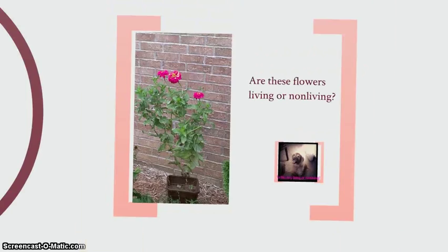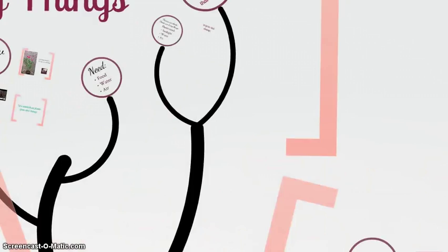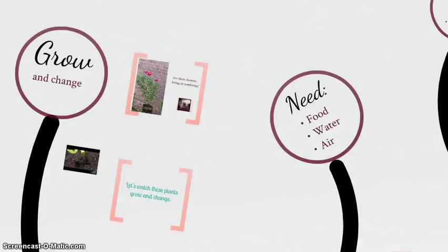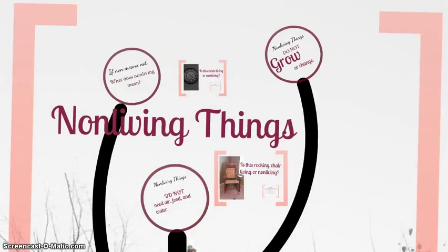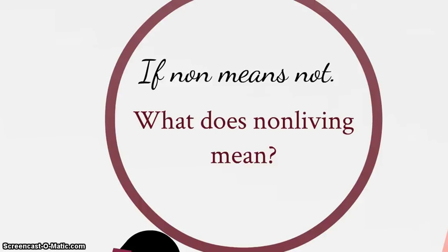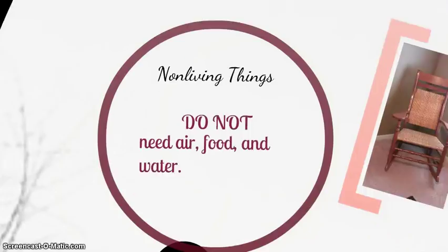Are these flowers living or non-living? That's right, they're living. Is this dog living or non-living? It is alive. Non-living things: if non means not, what does non-living mean? Not living. Non-living things do not grow or change. Non-living things do not need air, food, and water.